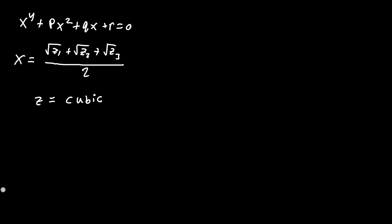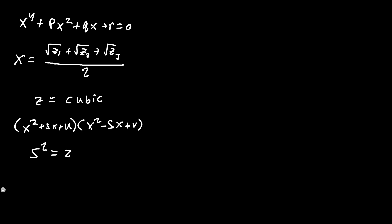We have to use the resolvent cubic. After splitting the quartic into two quadratic factors — x² plus sx plus u, times x² minus sx plus v — and doing all of the simplifying, we get a cubic in terms of s squared. Setting s² equal to z is why we have z1, z2, z3. We're using all three roots of the resolvent cubic.